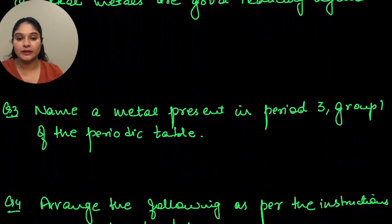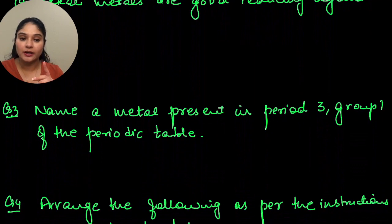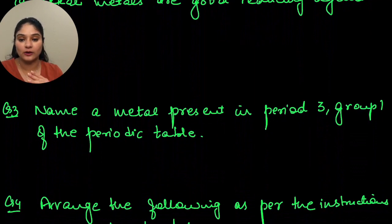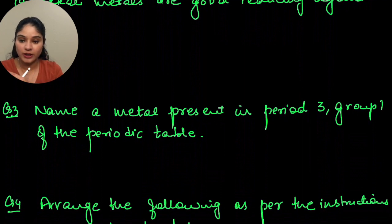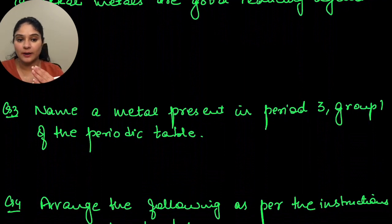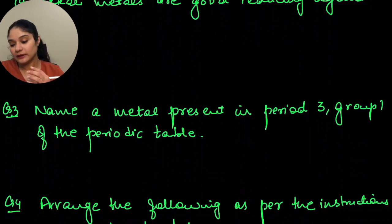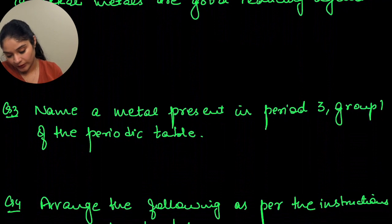Name a metal present in period 3, group 1 of the periodic table. Period 3 and group 1 — you can pick up the metal. That would be sodium.